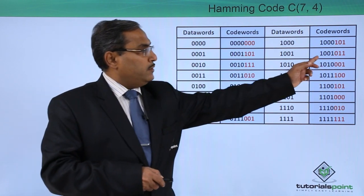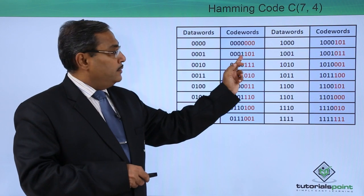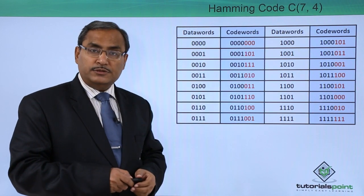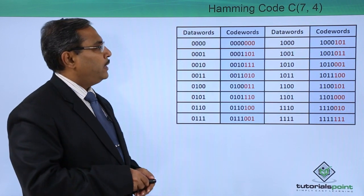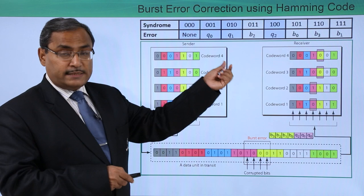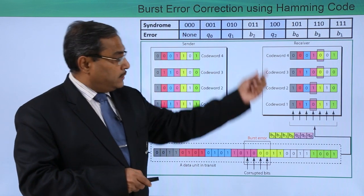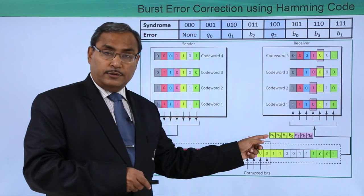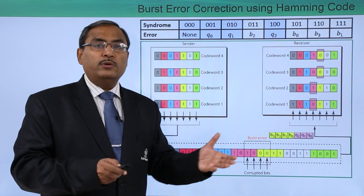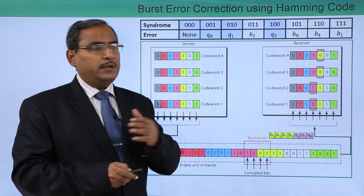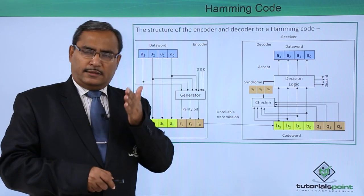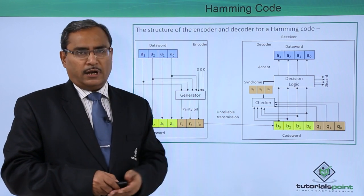Which bit was corrupted? The first bit — B3. The syndrome value is 1, 1, 0. Looking up the table, syndrome 1, 1, 0 indicates that B3 has got corrupted. Corrupted means the 1 will be replaced by its complemented value. So the recovered data word becomes 0, 0, 0, 1 — which is our original data. This is the detection and correction done using Hamming code.